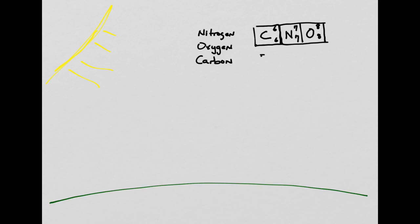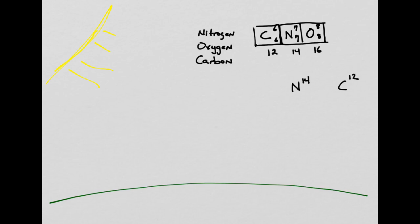Carbon has six protons and six neutrons — the atomic weight, as you may remember from chemistry, is the combination of those two. So we have atomic weights of twelve, fourteen, and sixteen. We call the standard nitrogen nitrogen-14 and we call carbon carbon-12.